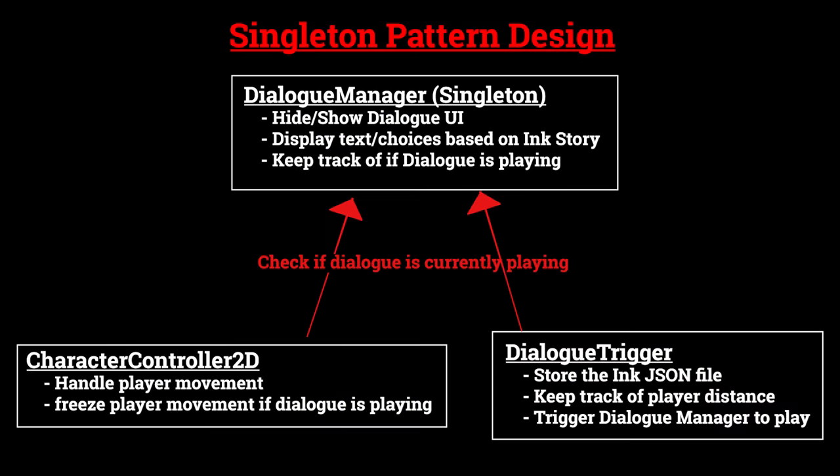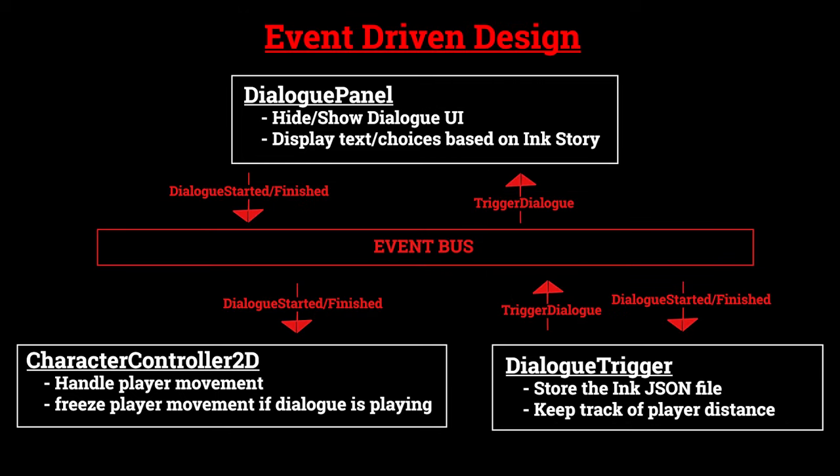For example, our player controller script will use that information to freeze the player's movement if dialogue is playing. After we've clicked through all of the dialogue for that NPC, the dialogue manager will hide the dialogue panel and then exit dialogue mode, allowing the player to move again. There are a lot of ways to architect this, each with their own pros and cons. We'll be using a singleton pattern in this tutorial; however, something like an event-driven system would also work quite well if you're familiar with those concepts.